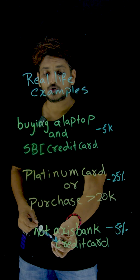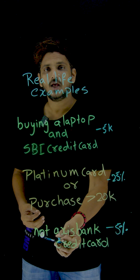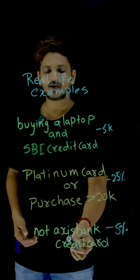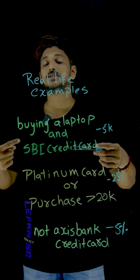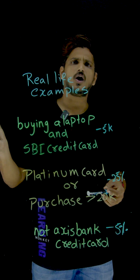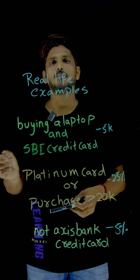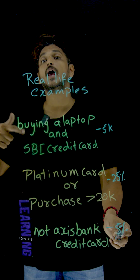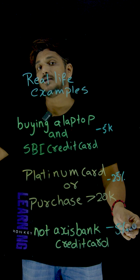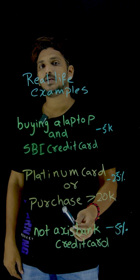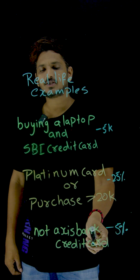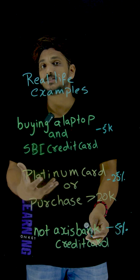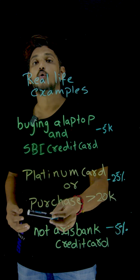Now coming to the last one: the NOT operator. Sometimes we see offers like this. NOT Axis Bank credit card means other than Axis Bank credit card — all other credit cards are applicable. For any credit card other than Axis Bank, you are going to get a 5% discount. That means not Axis Bank credit card. If it is not an Axis Bank credit card, then this condition is going to be true.